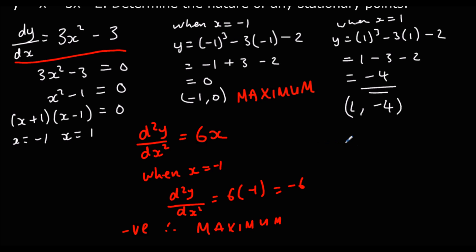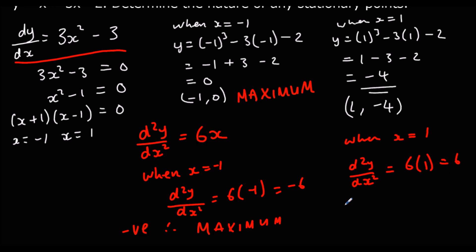And when x is 1: the gradient of the gradient is 6(1) = 6, which is positive — therefore it is a minimum. So (1, −4) is a minimum.